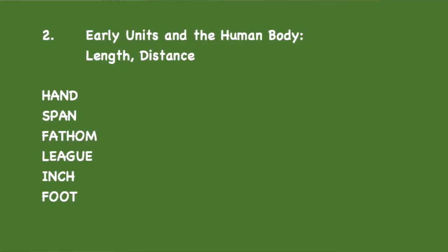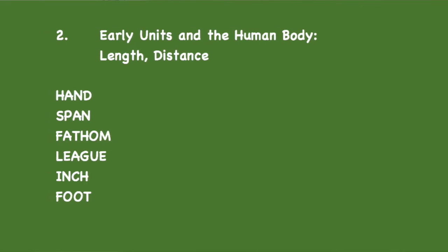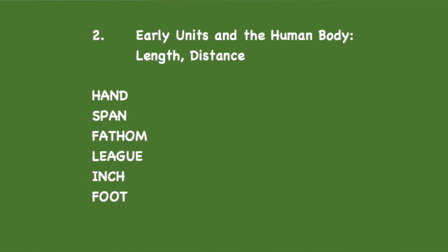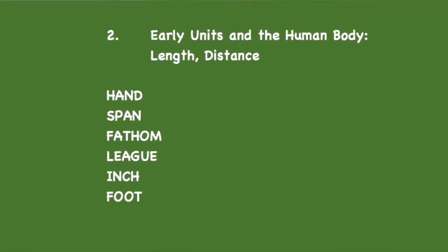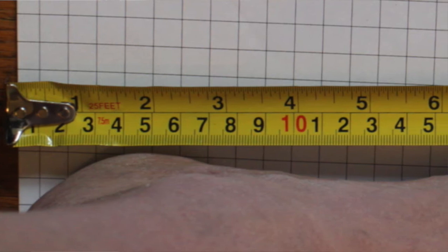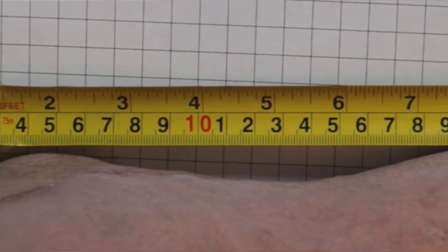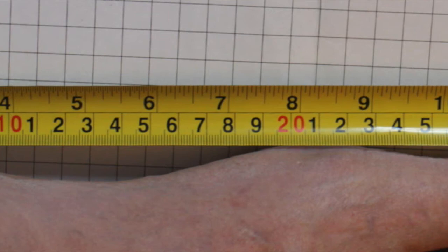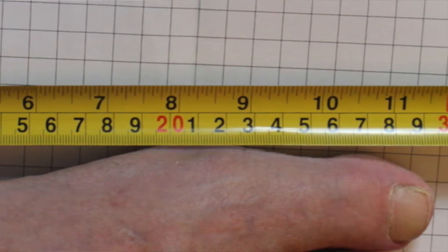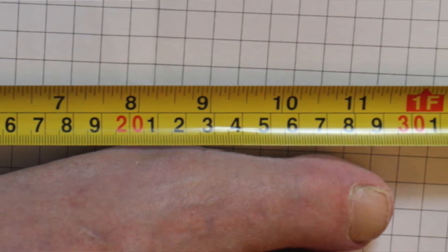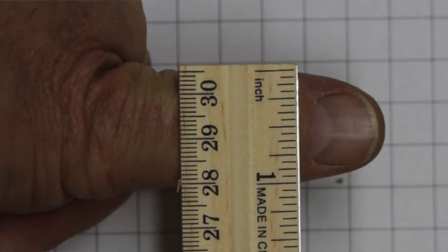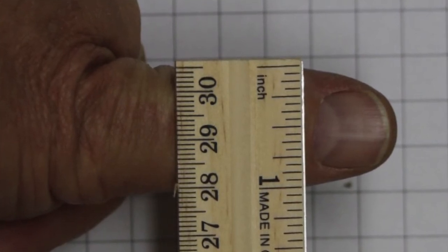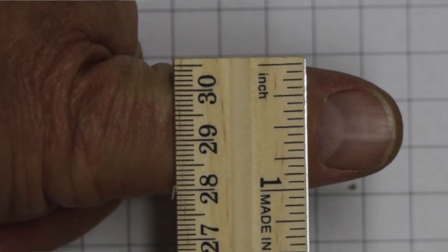We already mentioned yards, feet, and inches. These units are part of the British imperial system. They also have a long history, and they originally also referred to body parts. The foot is pretty obvious — it refers to the length of a human foot. It's actually a pretty big foot, for I wear size 14 shoes, and yet my foot is less than one foot long. The inch refers to the width of a man's thumb. Wikipedia tells me that in the year 1150, King David of Scotland decreed that the inch is the width of a man's thumb as measured just below the nail.